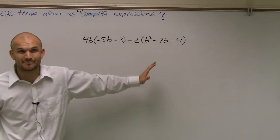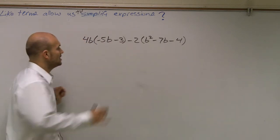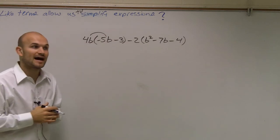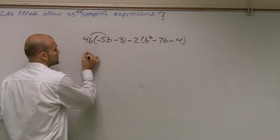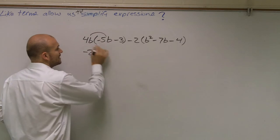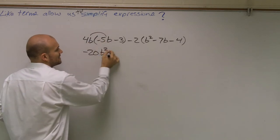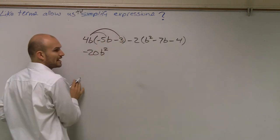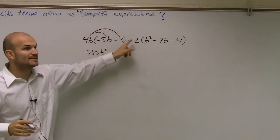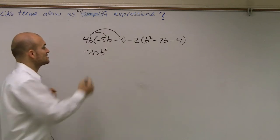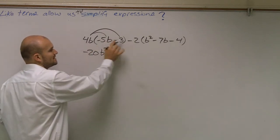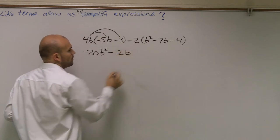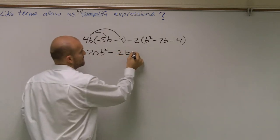For this one, I'm not going to rewrite it because there's a lot of multiplication going on, but I'm just going to say 4b times negative 5b, you multiply your numbers, which provides me a negative 20, and then b times b gives me b squared. Then I need to multiply the 4b times the negative 3. So I multiply the numbers, there's nothing to multiply the b by, so it's just going to be 4b times negative 3, which provides me a negative 12b.